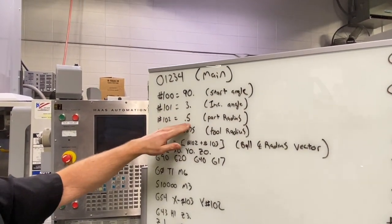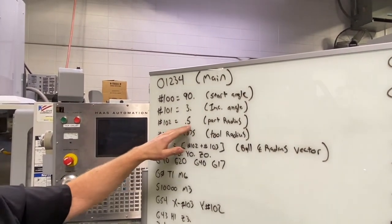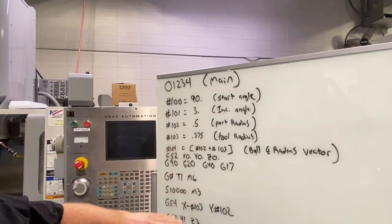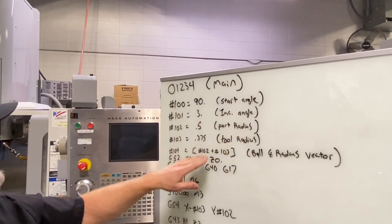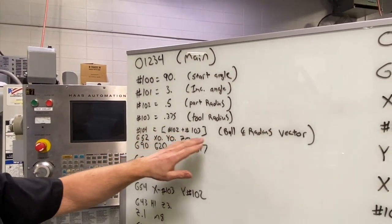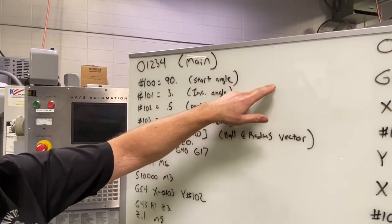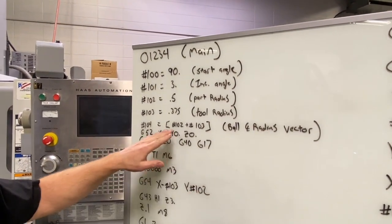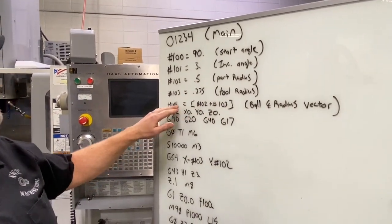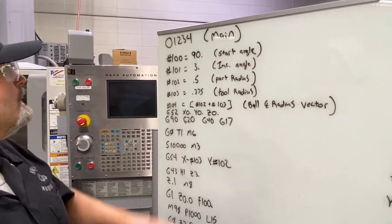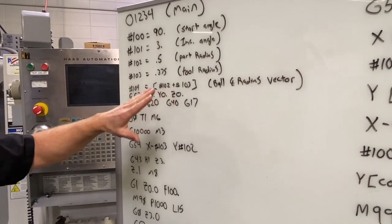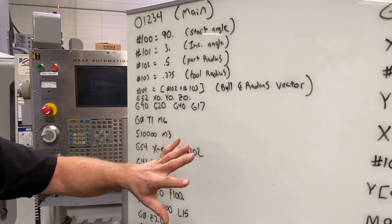Variable 102 is 0.5 — our part radius. To switch to the three-eighths side I just change that to 0.375. Variable 103 is our tool radius — three-eighths of an inch for the three-quarter inch ball nose. Variable 104 is the ball centerline radius vector, calculated as variable 102 plus variable 103, equaling 0.875. The program then starts with a G52 datum shift cleared to zero, eliminating any active shift so that if the machine is restarted mid-cycle it begins from zero.